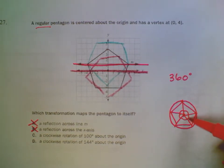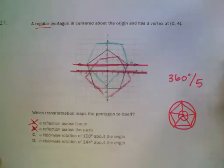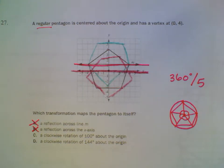So, I can figure out how many degrees each angle is by dividing 360 by 5. When you do 360 divided by 5, you get 72.